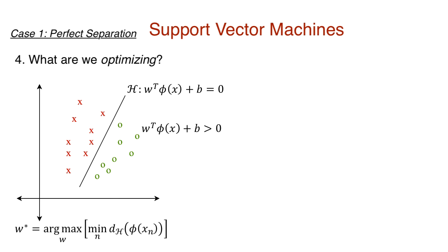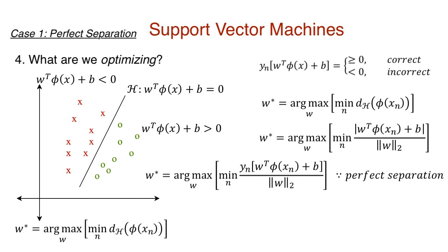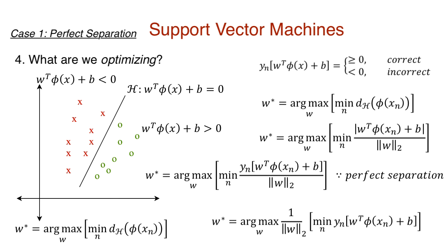While making a prediction, substituting any positive group point in the hyperplane equation leads to a value greater than zero, and any negative group point leads to a negative value. Our labels will be plus one for the positive group and negative one for the negative group. The product of the predicted label and the actual label will be greater than zero if classified correctly, and less than zero otherwise. For a perfectly separable dataset, the optimal hyperplane classifies all points correctly. The inner term, min y_n times w transpose phi(x) plus b, represents the distance of the closest point to the decision boundary.